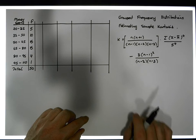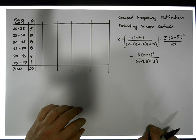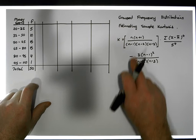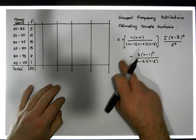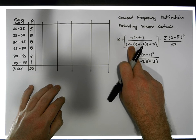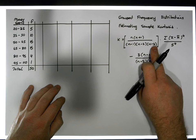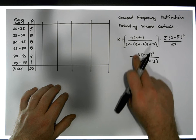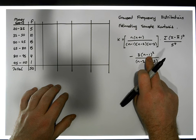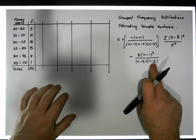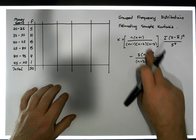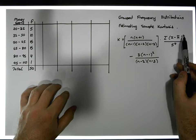All we need are three or four parameters. We need the sample size — in our case it's 50 — so the first factor is 50 times 51 divided by 49 times 48 times 47. The correction term is (n−1) squared divided by (n−2) times (n−3). Both of these are just numbers based on the sample size, so there's nothing complicated there.